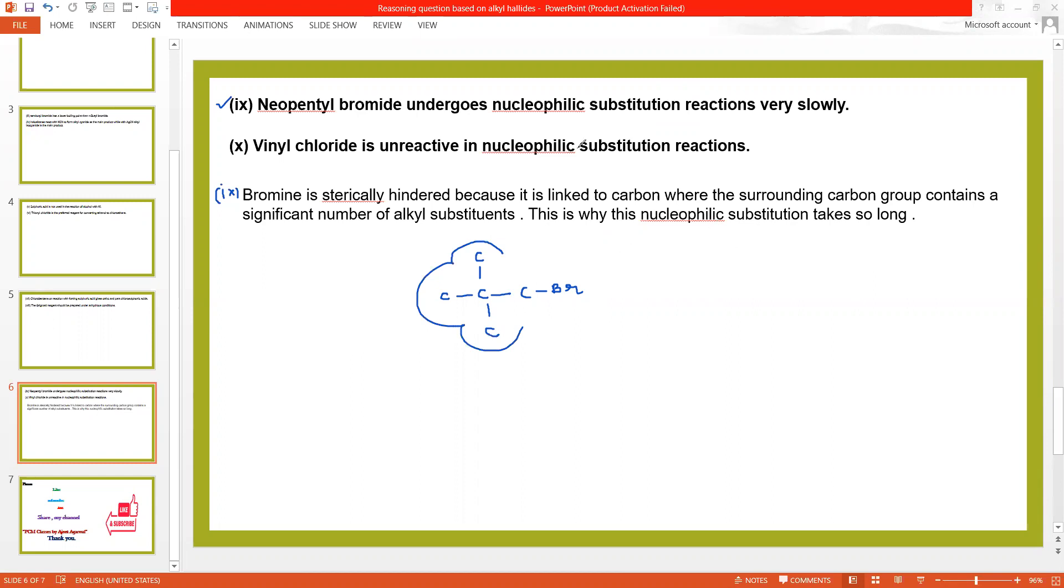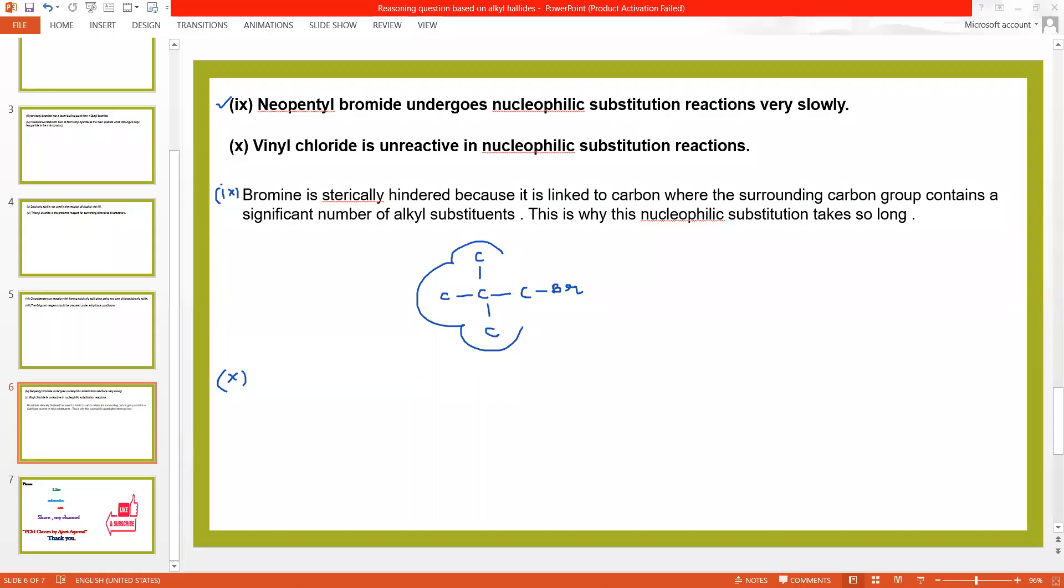And come to last reason of today's class. Vinyl chloride is unreactive in nucleophilic substitution reaction. Vinyl chloride is that in which halogen group is directly bonded to sp2 hybridized carbon.